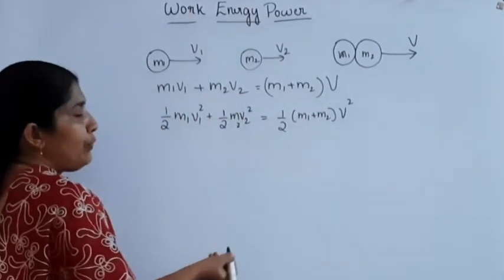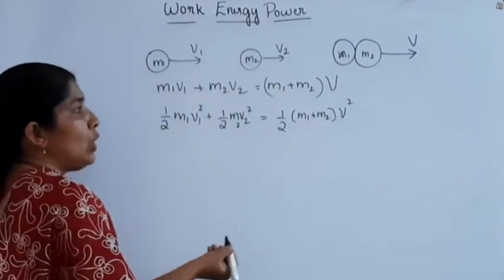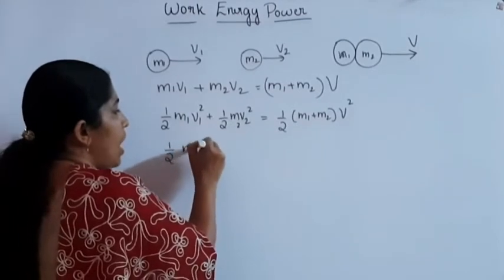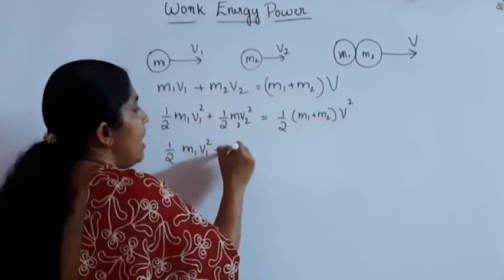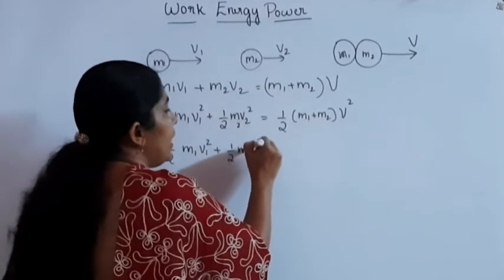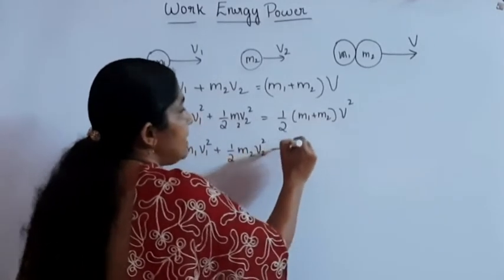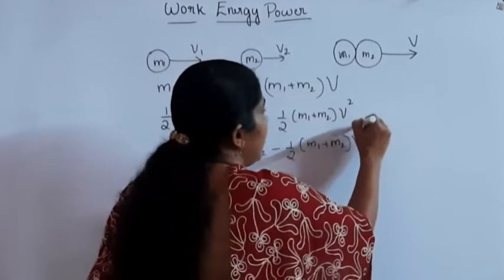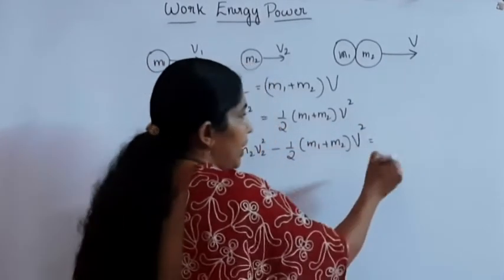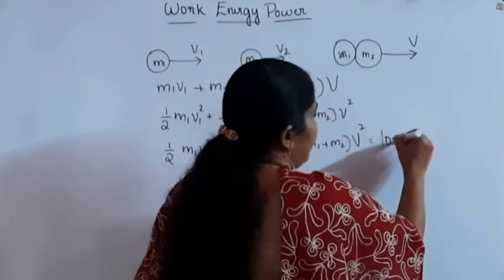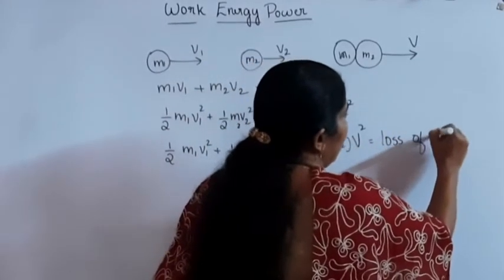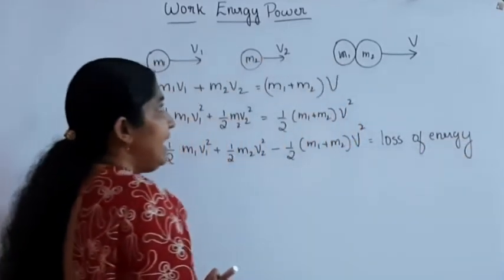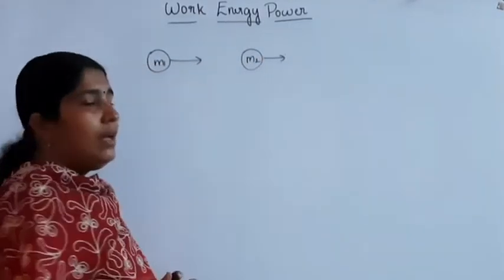Then, what about the loss of energy? The loss of energy is equal to ½M1V1² + ½M2V2² − ½(M1 + M2)V². This is the way we can find out the loss of energy. This is the case of perfectly inelastic collision.